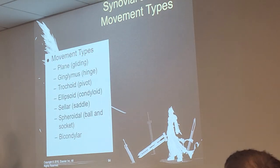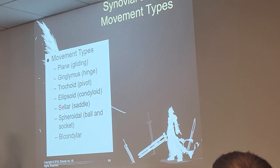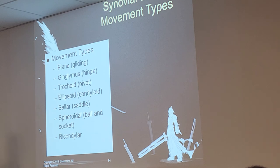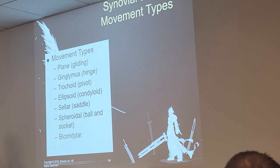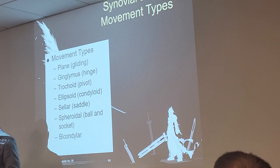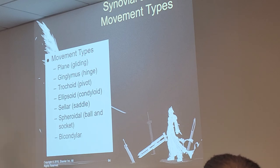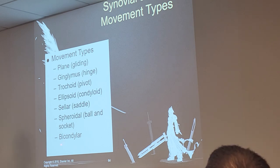There are your classifications of movement types one more time. Remember these terms — as we move forward in Rad Pro 2, we're going to talk about all the joints and how they fit into these categories. These are your main synovial joint categories based on movement type. There are seven total. We did not talk about bicondylar last semester — that's one more I need to add in.